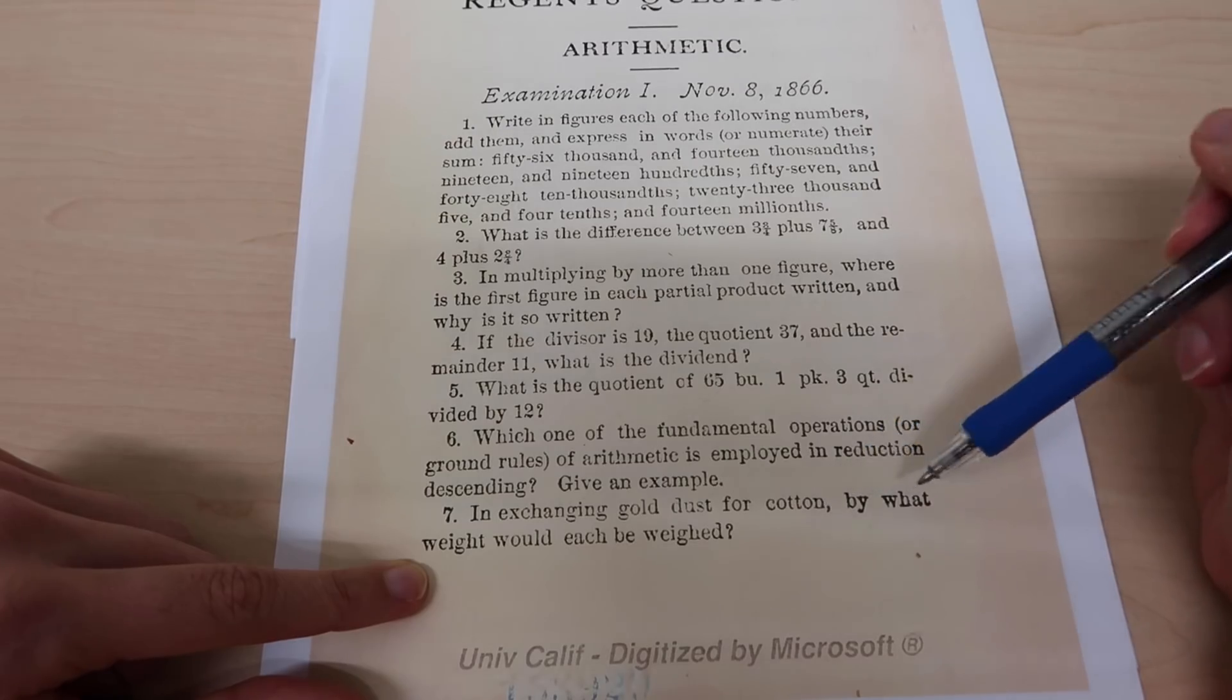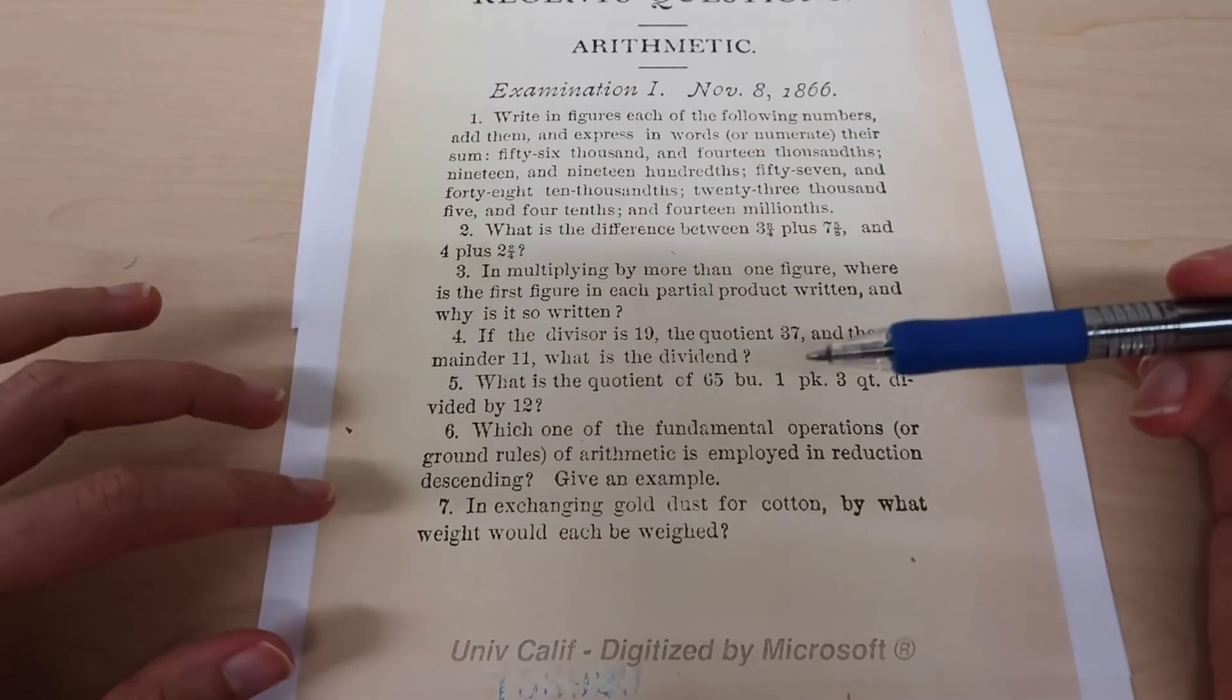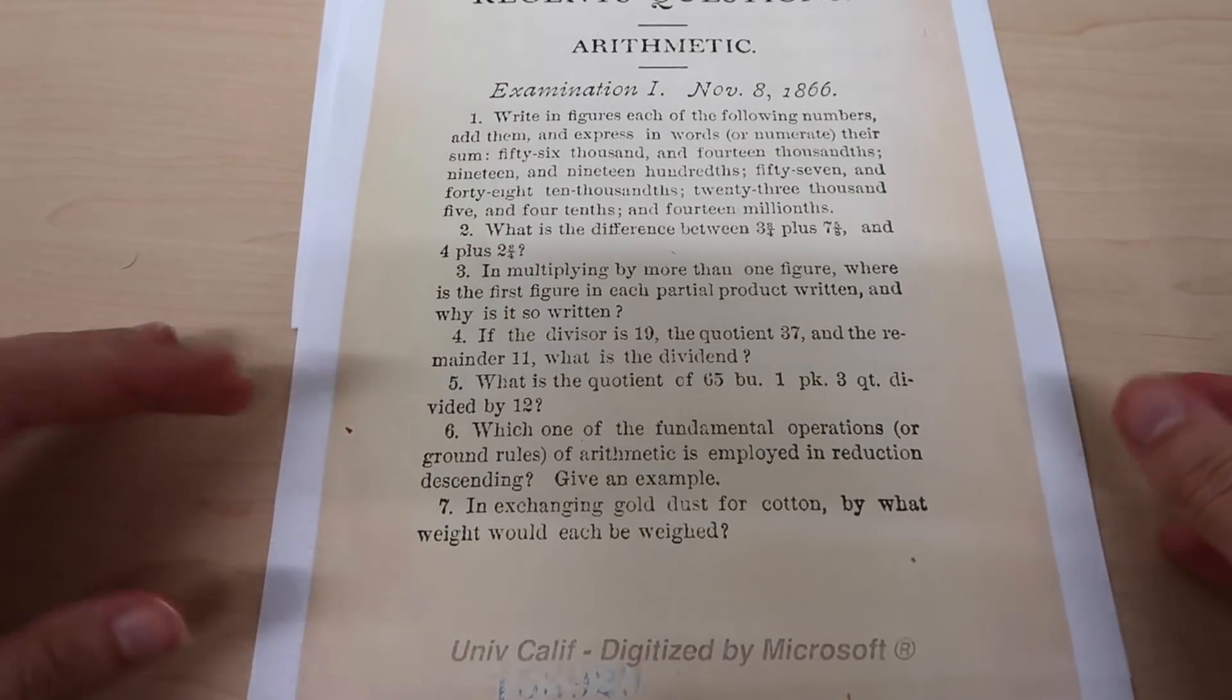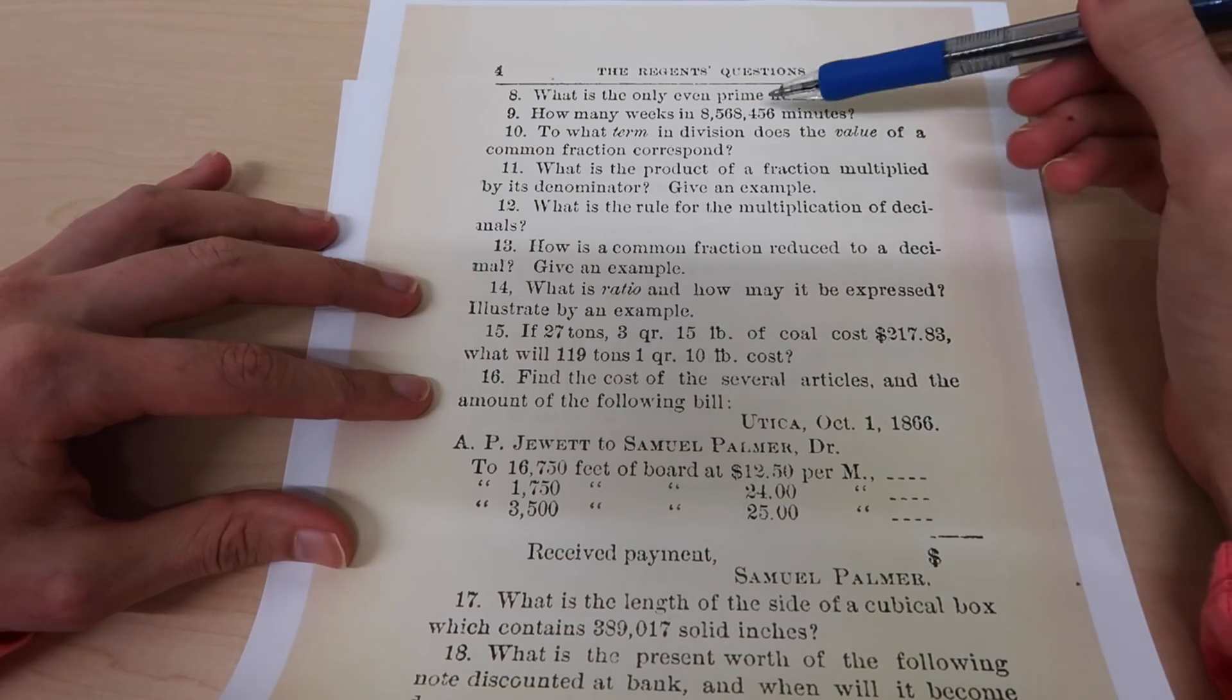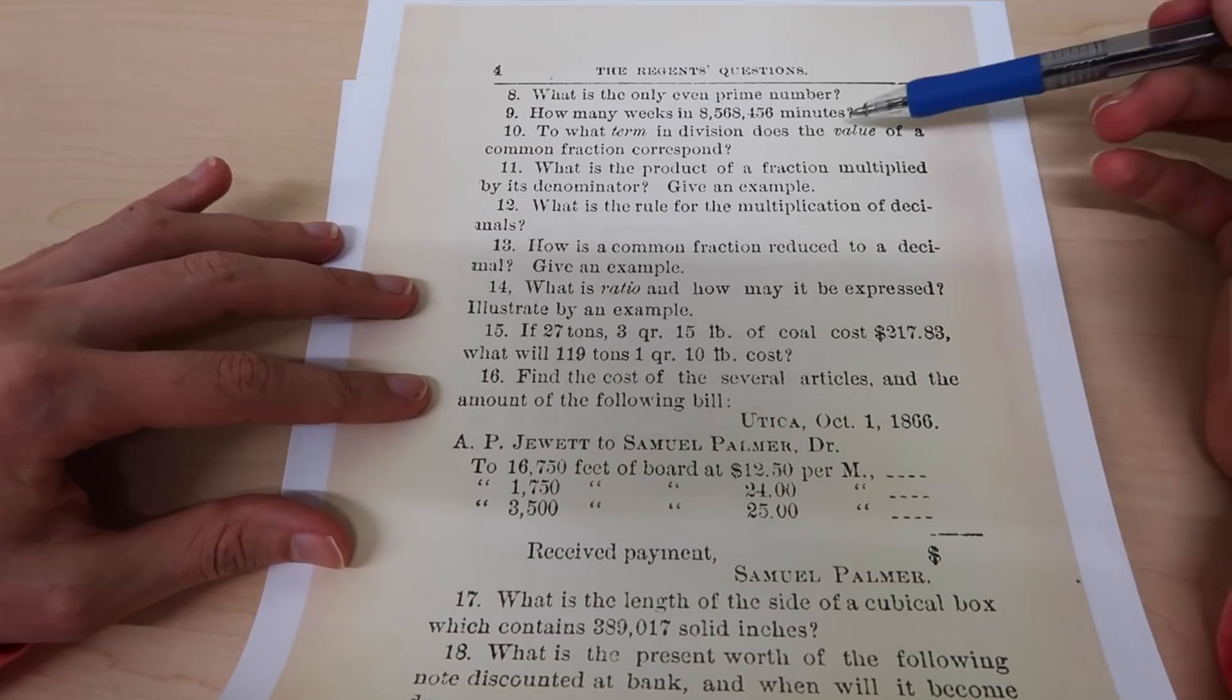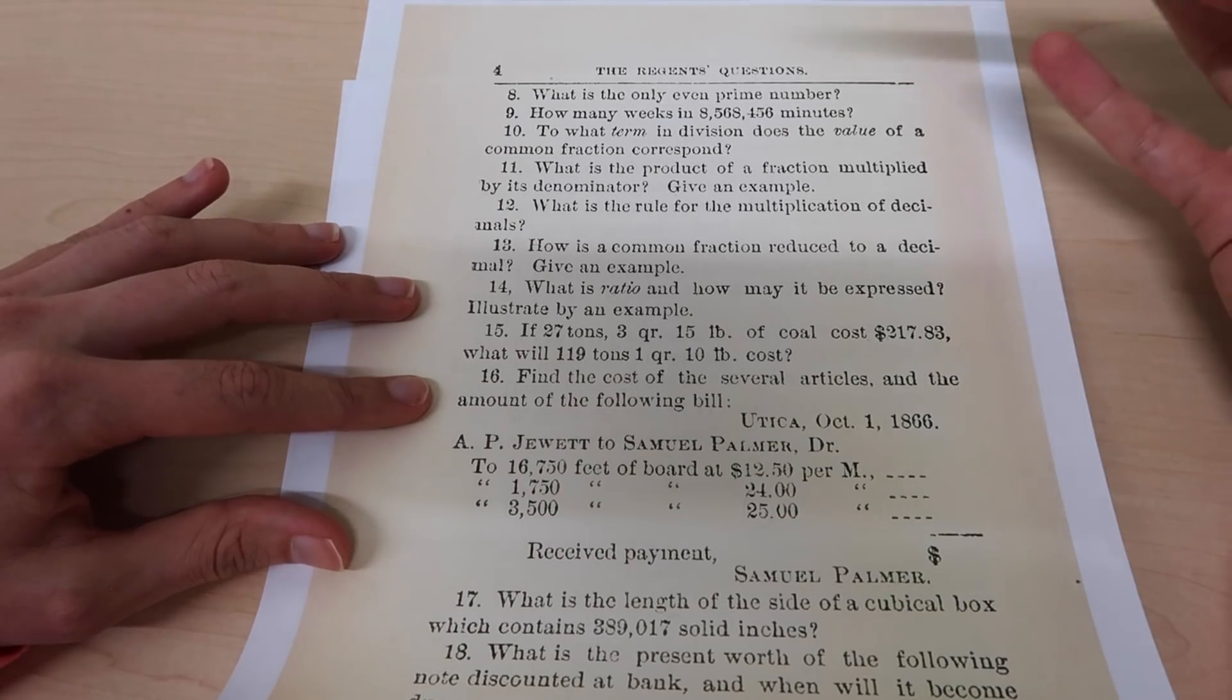Number seven: in exchanging gold dust for cotton, by what weight would each be weighed? This one seems a bit out of my reach. I guess I don't know exactly what they're saying, but I feel like maybe they're on some old school scale and they're needing to weigh gold dust and cotton against some standard weight. Here's one that I think we'll be able to get: what is the only even prime number? The answer to that would be two. Number nine: how many weeks in eight million minutes? I think this would be a process of dividing, probably a series of long division problems. You'd want to convert from minutes, divide it by 60 to find out how many hours there are, divided by 24 to get how many days, divided by seven days into weeks.